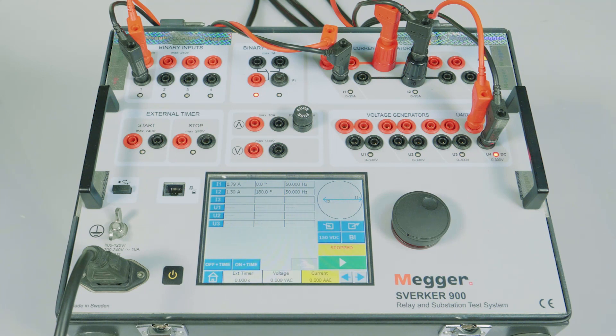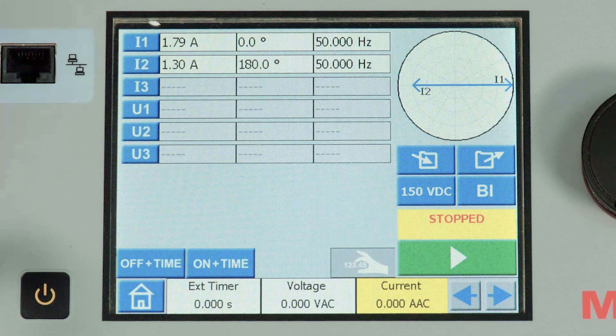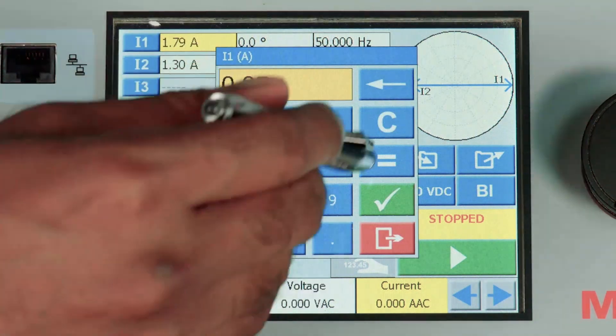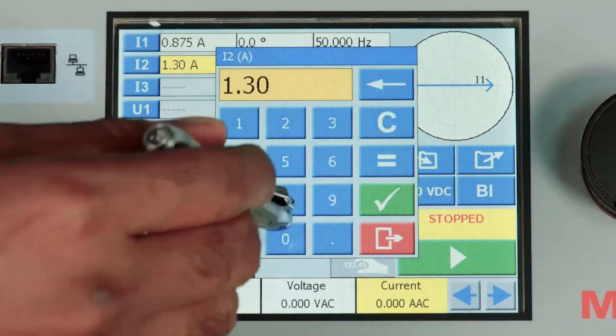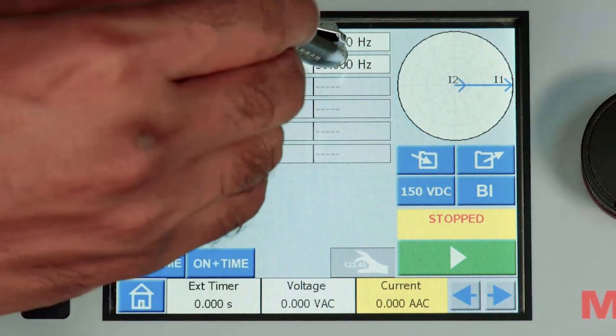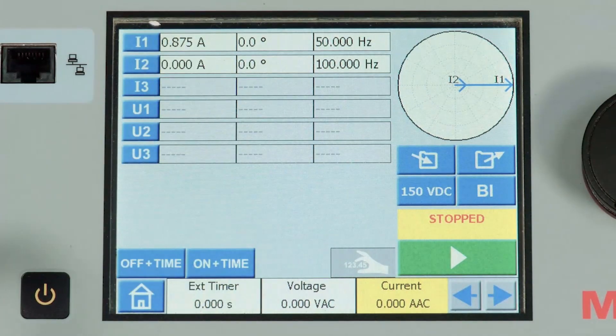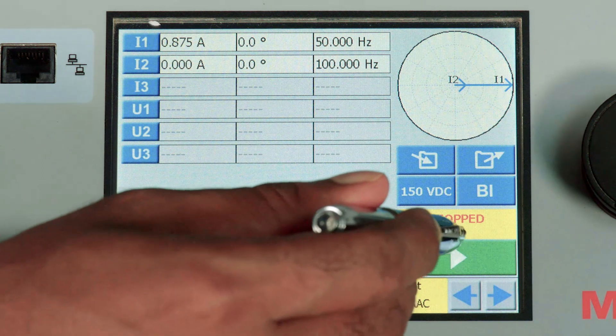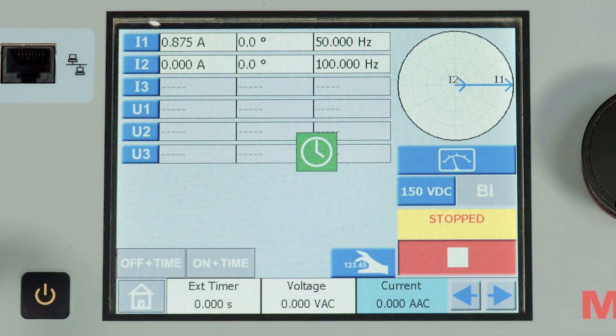Let us test using the operate-to-non-operate method. In this method, we will inject 0.875A angle 0° at 50 Hz in CT1 and 0A angle 0° at 100 Hz in CT2 of the test kit. When the above value is injected, the relay will trip in differential.